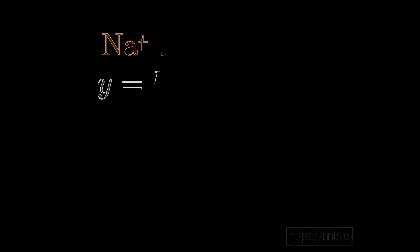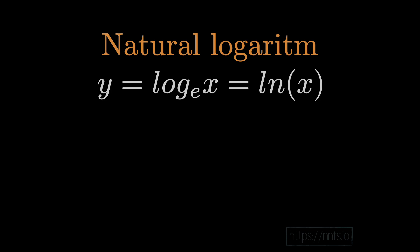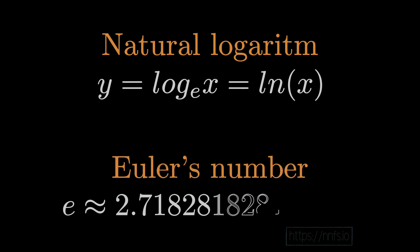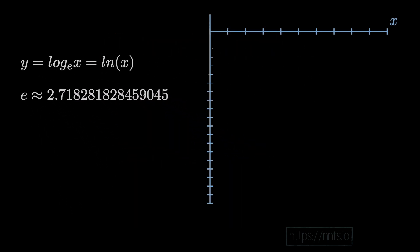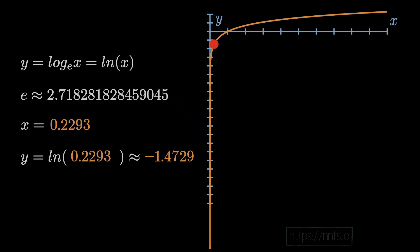Generally speaking, when someone mentions 'log' without specifying a base, they are referring to the natural log, also written as 'ln'. In programming, just 'log' with a parameter means the natural log. The natural log is log base e — Euler's number — which is a hint of why this is convenient for back propagation. For this series and programming in general, assume that log means natural log, base e.